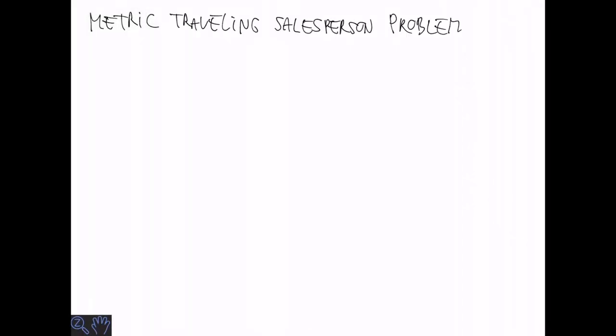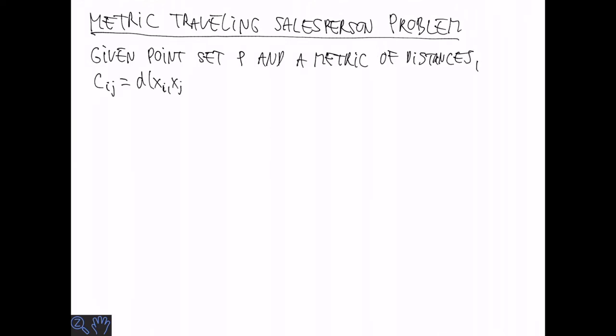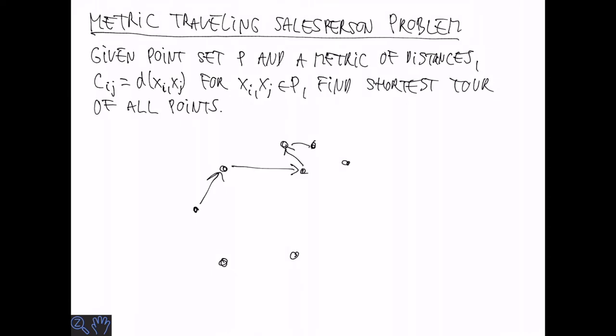The final problem we're going to look at today is the metric traveling salesperson problem. We're given a point set p and a metric on these points. Let's call the distance from point i to point j cij.